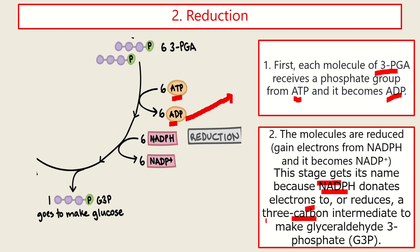This stage gets its name because NADPH donates electrons or reduces a 3-carbon intermediate to make glyceraldehyde 3-phosphate or G3P. The NADPH, we all know that this molecule carries electrons. So it will donate electrons to the 3-PGA.